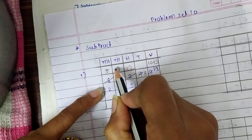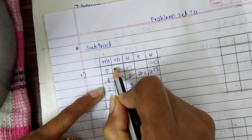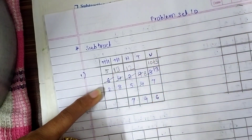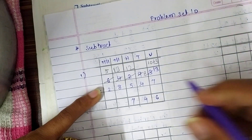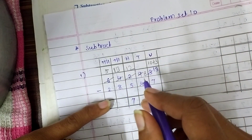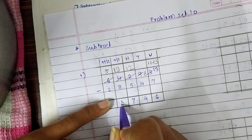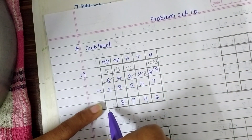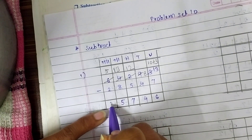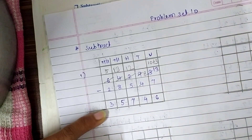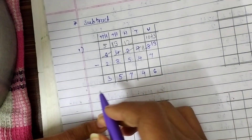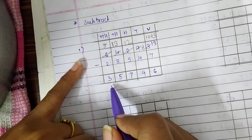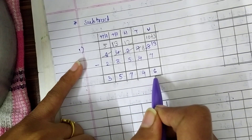Here the number is 5, and plus 1,000 becomes 13,000. So 13 minus 8 is 5, and 5 minus 2 the number becomes 3. So our subtraction is ready for question number 1 — it's 35,746.